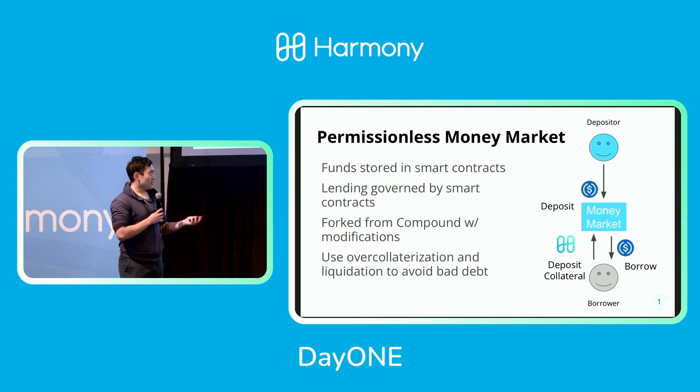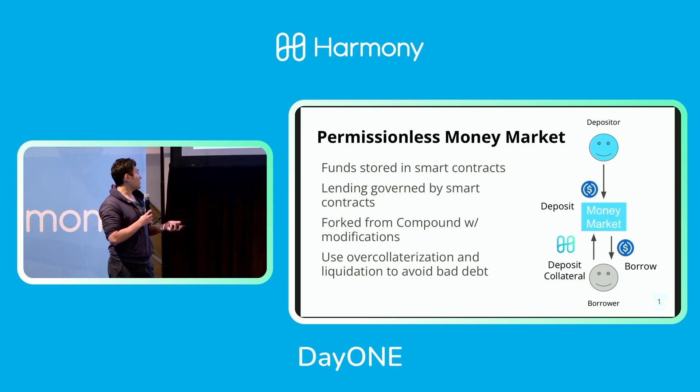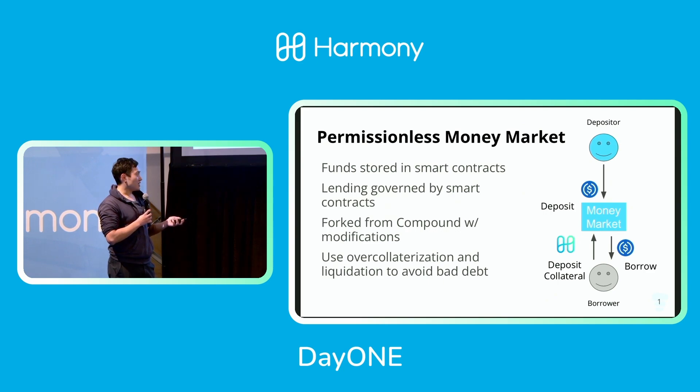This is a somewhat new concept. Our code — we forked it from the Compound code, which is a money market on Ethereum that kind of started this whole thing. One important aspect is that to borrow, you need to deposit collateral. This is called over-collateralization. In case you can't return the borrowed money, we need to take your collateral. You deposit more collateral than you borrow, so we can always make sure that our protocol stays solvent.